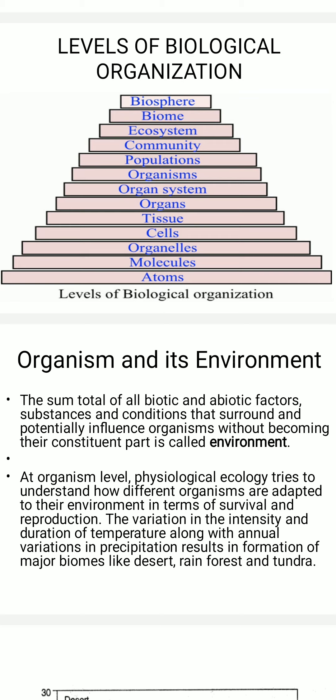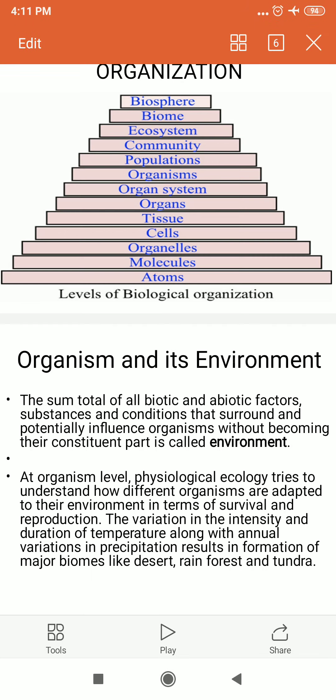Under organisms and their environment, we will study the environment. The sum total of all biotic and abiotic factors — biotic refers to living organisms, from unicellular amoeba and protozoans up to multicellular highly organized mammals, and from blue-green algae up to advanced monocots — combined with abiotic non-living factors, all the substances and conditions that surround and potentially influence the organisms without becoming their constituent part, is called environment.